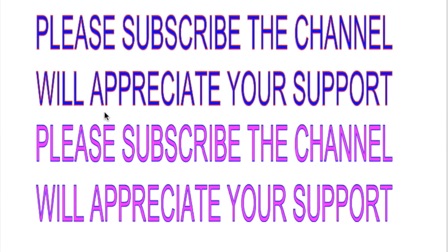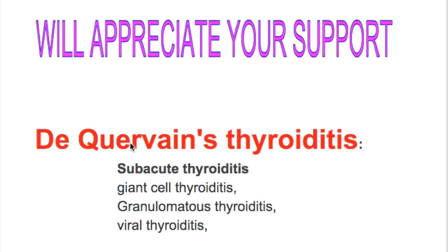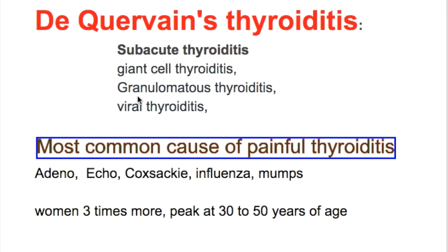In this video we will discuss De Quervain's thyroiditis. De Quervain's thyroiditis is a sub-acute form of thyroiditis and is also known as giant cell thyroiditis, granulomatous thyroiditis, or viral thyroiditis. It is the most common cause of painful thyroiditis.